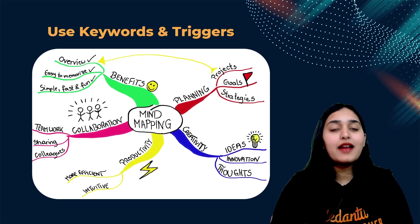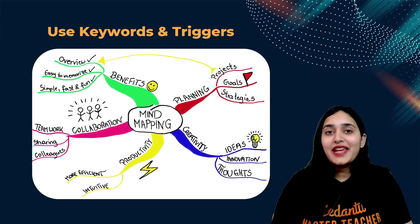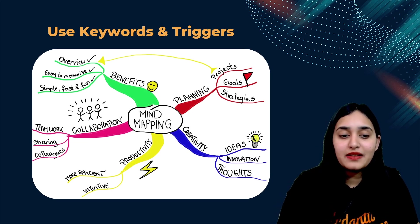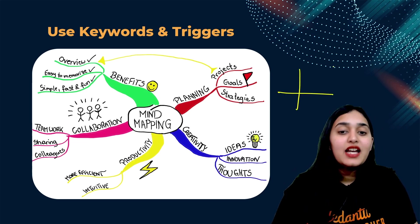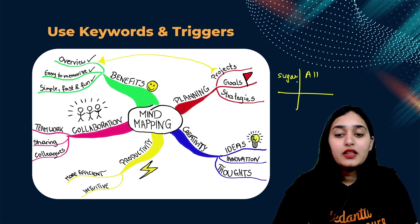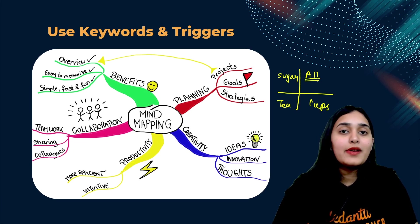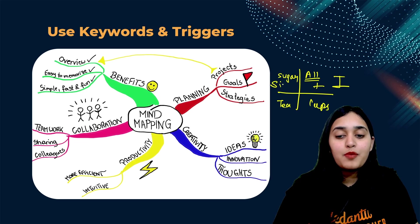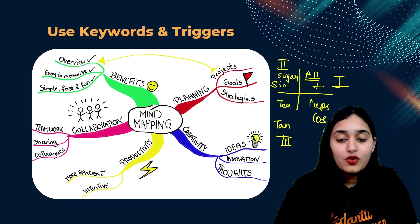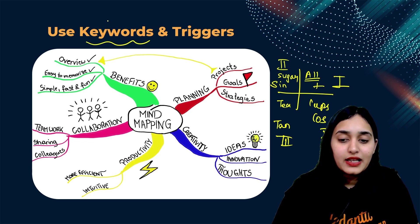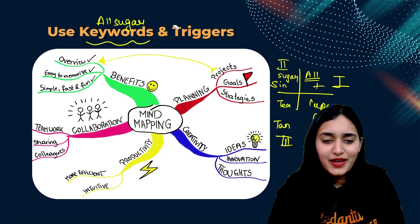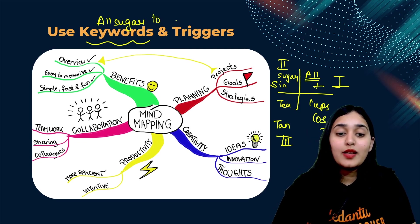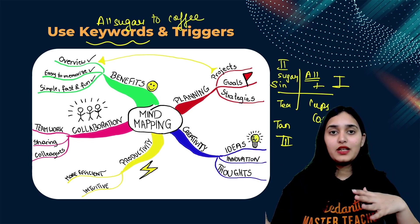Next, try to use some keywords and triggers as well. Because, again, you are not able to remember some things. So sometimes you will have shortcuts. For example, in trigonometry, if you don't remember the sign, you have a shortcut, all sugar tea cups. It says that all trigonometric ratios have positive sign in the first quadrant. Sign has positive sign in the second quadrant. Tan has positive sign in the third quadrant. And cos has positive sign in the fourth quadrant. So this is a shortcut. So you can use a keyword for it like all sugar tea cups or add sugar to coffee. So anything that you remember, you just write it down. So it will be like a trigger for you. It will be like a keyword for you. And you'll remember it. It is like a mnemonics for you.